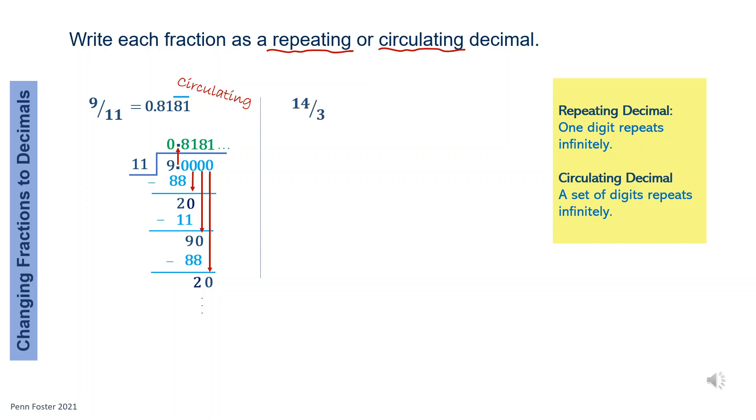4 over 3 follow the same long division steps. The quotient is a repeating decimal since one digit 6 repeats indefinitely. Again, put a little bar over the digit 6 to signify it as a repeating digit.